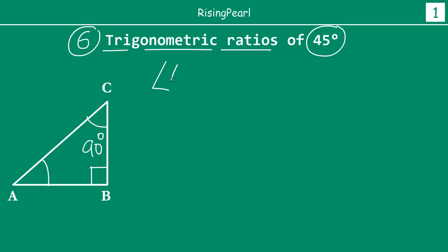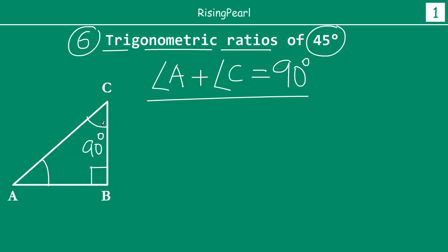So angle A and angle C are the acute angles. So we can say angle A plus angle C is equal to 90 degrees. Why? Because the sum total of three angles A, B and C is 180 degrees. So if B alone is 90 degrees, A and C together will be 90 degrees. Now if you think about how many ways can you draw a right triangle such that angle A and angle C, if you add them, is 90 degrees, the answer is infinite number of ways.